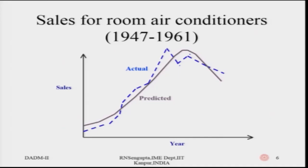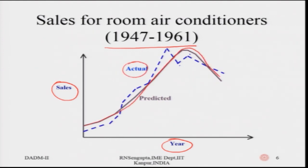What is the outcome of a Bass model? For example, this is the sales for room air conditioners based on data taken from a paper in literature — sales versus year. You can see the dotted lines are the actual sales and this smooth curve is actually predicted by the Bass model. You can see this is more or less similar to the actual sales that the AC market saw in this particular time period.